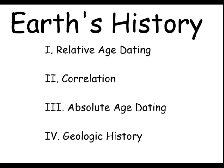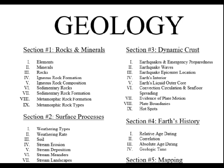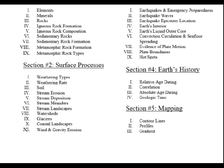Relative age dating — not as in going out with your uncle. Relative meaning one thing compared to another, and age dating meaning figuring out how old something is compared to something else — not how many years old. You just told me that a certain rock was older than another. We know rock layer B is older than rock layer A, but we don't know how old either one actually is. We just know their relative ages.